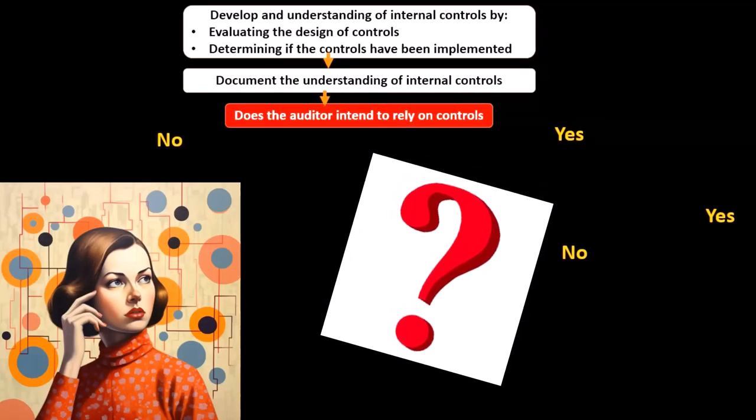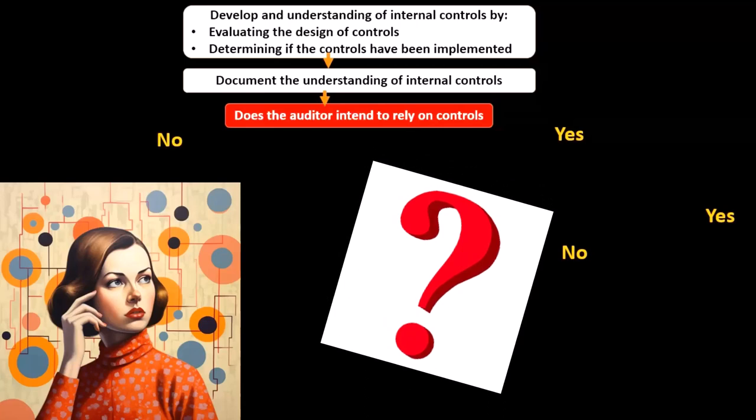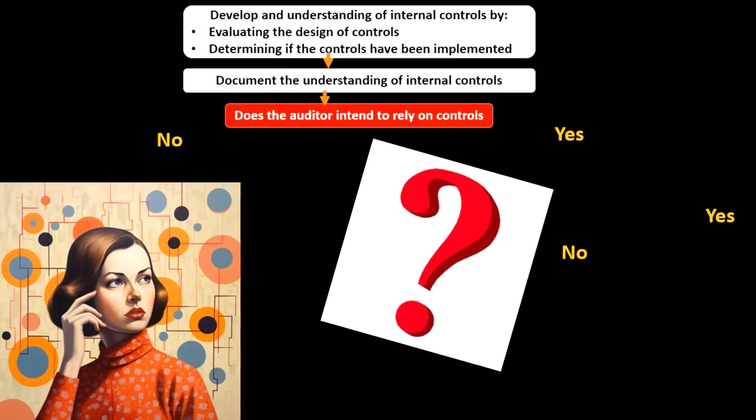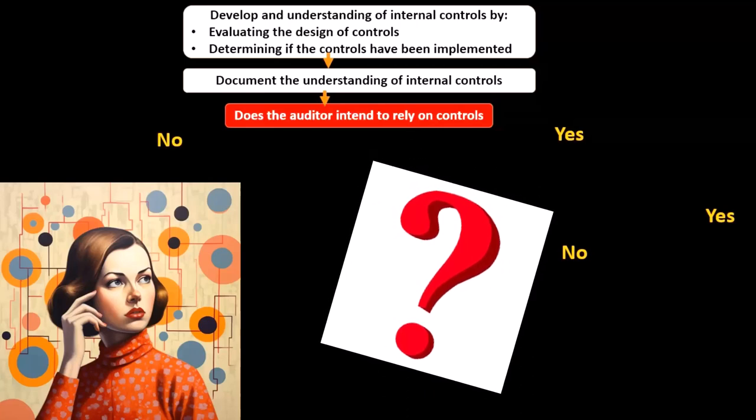Now, if we're thinking about publicly traded companies, we will probably be saying yes, we're going to rely on the internal controls. If we cannot rely on the controls, we're in big trouble because we typically can't do enough substantive testing in the timeframe given to really support the full audit of a publicly traded company.